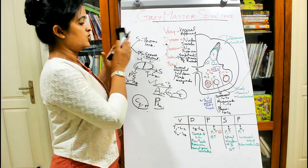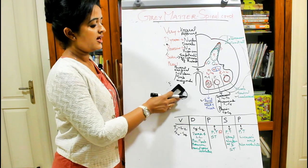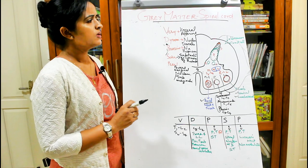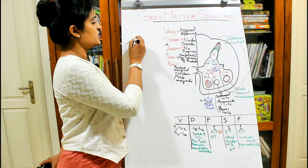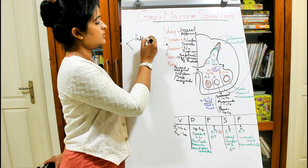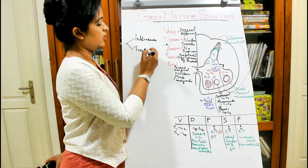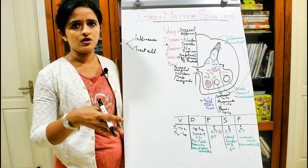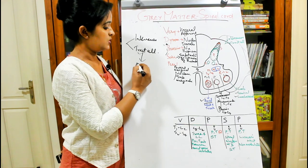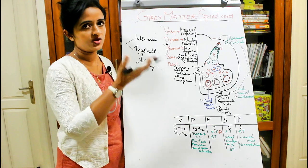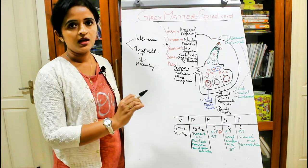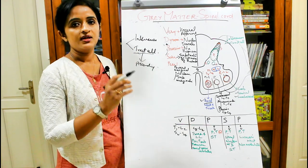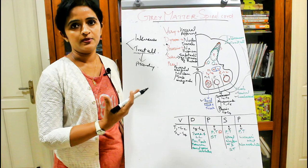Moving to the posterior horn: unlike the anterior and lateral horns, which are mainly motor, the posterior horn contains mainly sensory neurons. The posterior horn is made up of two types of cells — interneurons and tract cells. Interneurons connect different neurons, while tract cells give rise to the ascending tracts. The axons of these tract cells form the ascending fibers of the spinal cord.